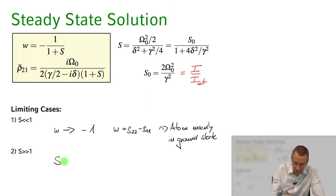So let's go s goes to infinity. So in this case you see now the inversion, the steady state inversion, actually goes to zero.